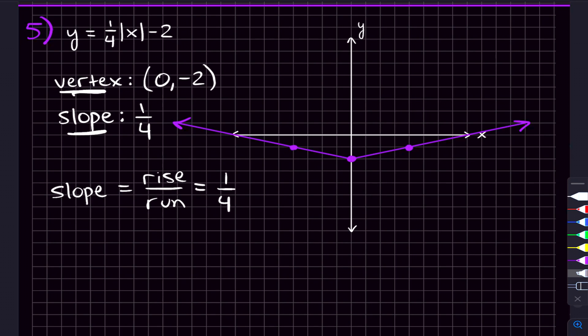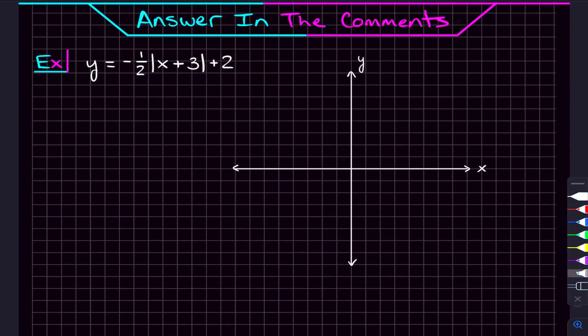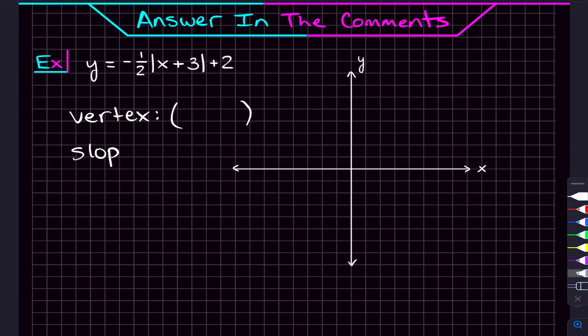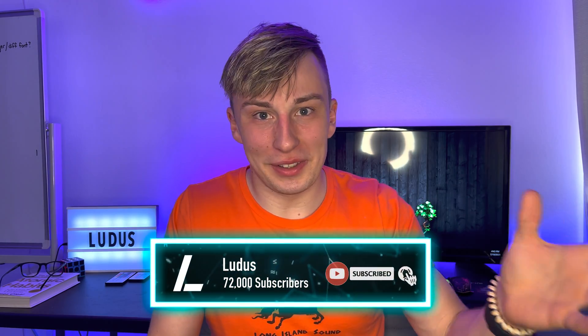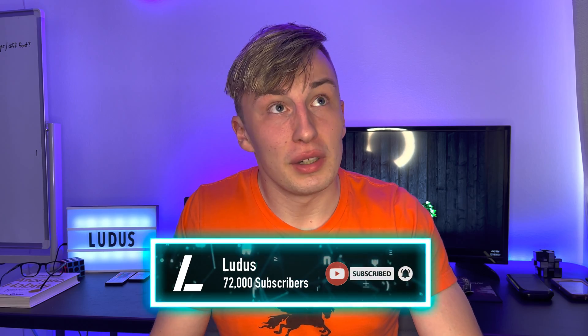If you're feeling comfortable, here's a problem to try: y = -1/2 · |x + 3| + 2. You can't draw a graph in the comments, but give me the vertex and the slope. Feel free to describe what the graph looks like in more detail too. Let me know the answer in the comments, and if you have questions, I'll try to get back to you. The printable notes are linked in the description — they're free, so grab them. Make sure you're subscribed; we're trying to get to 100k. That's going to do it for this video — see you guys soon.